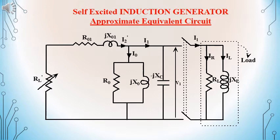The capacitor will be supplying the lagging reactive power to the generator as well as to the load. To the generator, which is given by X01 and X0, and to the load, which is given as XL. So the active power is provided by the prime mover, given in the equivalent circuit as RL dash, and the reactive power is supplied to the generator as well as to the load by the capacitive reactance XC. The active power will be divided into losses as well as that supplied to the load.